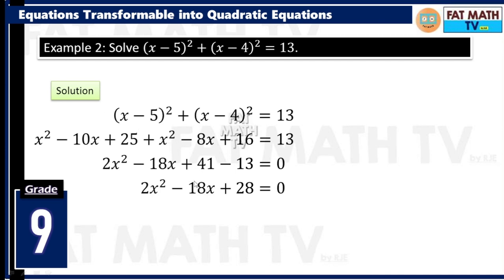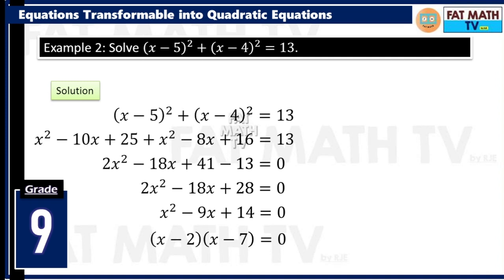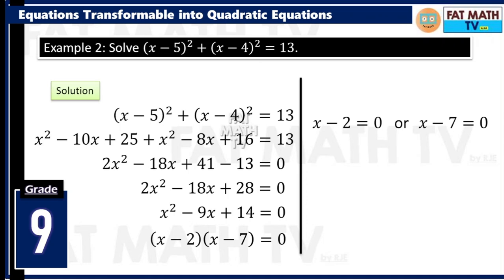We can factor this, but since we have a common factor for all terms, we can divide both sides by 2. We will have x squared minus 9x plus 14 equals 0. What factors of positive 14 give a sum of negative 9? That's negative 7 and negative 2. So the factors are x minus 2 and x minus 7 equals 0. Then x minus 2 equals 0 gives x equals 2, and x minus 7 equals 0 gives x equals 7.